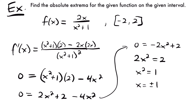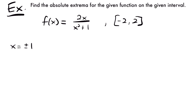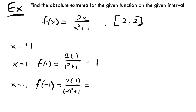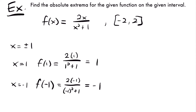Both values are valid since our interval is from negative 2 to 2, which includes both negative 1 and positive 1. So our critical numbers are 1 and negative 1, and we also need to test our endpoints. Starting with x equals 1, f of 1 equals 2 times 1 divided by 1 squared plus 1, which is 2 over 2, equal to 1. For x equals negative 1, we get 2 times negative 1 divided by negative 1 squared plus 1, equal to negative 1.